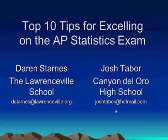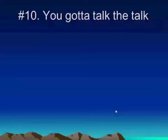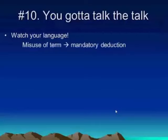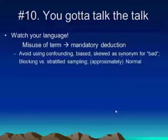I'm going to start with tip number 10. One of the most important things you have to realize in statistics is that you're speaking a very special language. My first tip for students: you've got to talk the talk on this exam. You have to use the language of statistics very carefully and precisely. AP exam readers are required in most rubrics to deduct credit for any misuse of a term, so if you're using terms defined in your textbook or on the AP statistics syllabus, you need to use them correctly.